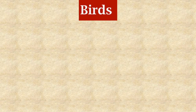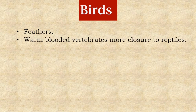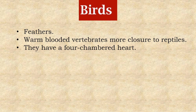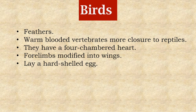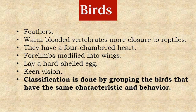The 5th group of vertebrates is birds. The unique feature of birds which differentiates them from other vertebrates is the presence of feathers. These are warm-blooded animals and their characteristics are more closely related to reptiles. Birds have a four-chambered heart. Their four limbs are modified into wings. They lay hard-shelled eggs. Keen vision is another characteristic of birds. Classification of birds is a little different from other vertebrates — it is done by grouping birds that share the same characteristics and behavior.